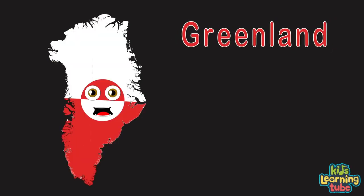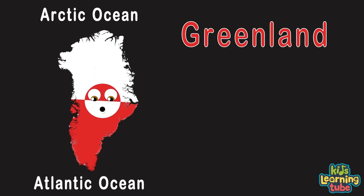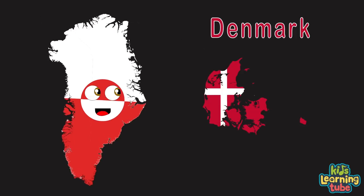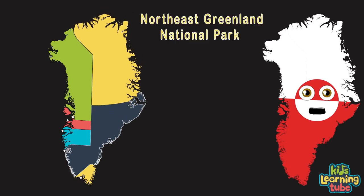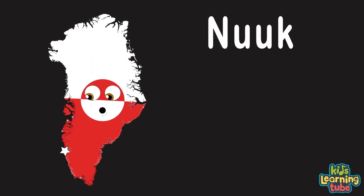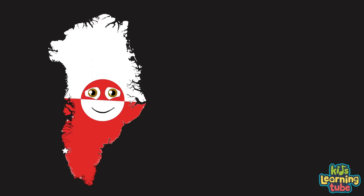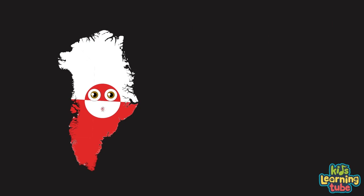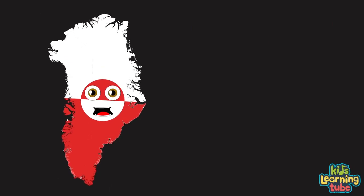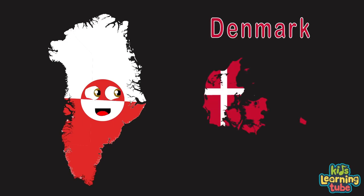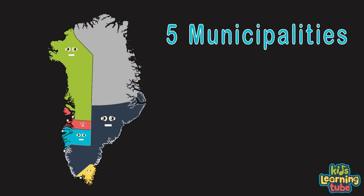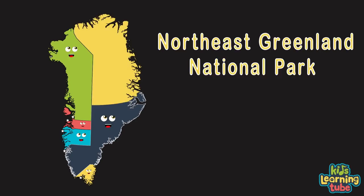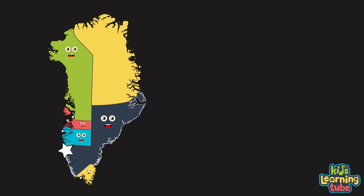I am Greenland, the largest island in the world, located between the Arctic and Atlantic Ocean. I'm an autonomous territory in the country of Denmark, a stone's throw from Canada. I have the largest national park in the world — it's called the Northeast Greenland National Park. My capital is Nuuk, located in the southwest of my island.